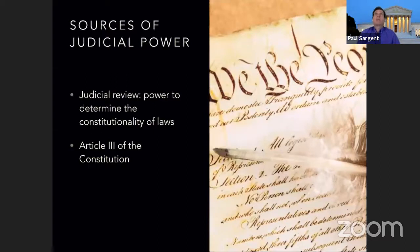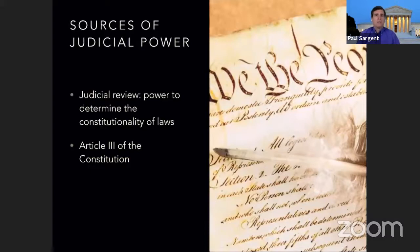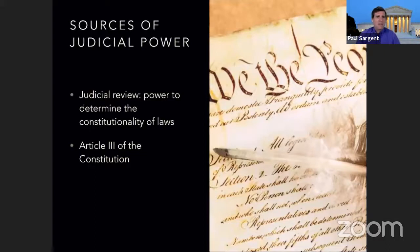Another source of judicial power comes from Article Three, which is very short. The founders didn't spend a lot of time writing about exactly what the court could do. They created a Supreme Court and said Congress could create whatever other courts it needed, so Congress has created a whole series of lower courts. Article Three also gave a few specific areas of jurisdiction to the Supreme Court itself — for example, cases involving a U.S. ambassador go straight to the Supreme Court.